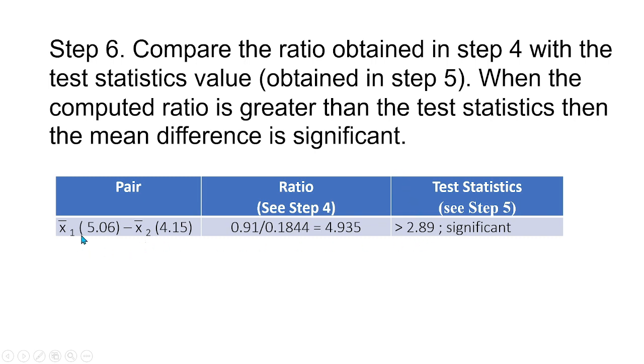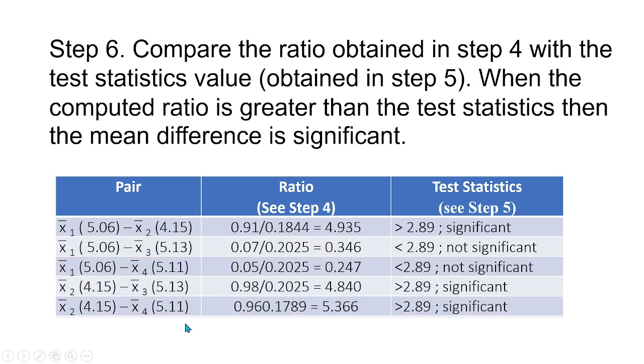So for example, for the first pair, our ratio was 4.935, and this is greater than the test statistics, which is 2.89. So that means the test is significant. We can say that 5.06 is not equal to 4.15. Or we can say that there is a significant difference between 5.06 and 4.15. For our next pair, 0.346 is lesser than 2.89. So this test is not significant. And therefore, we can say that 5.06 is equal to 5.13. So these are our decision for the rest of the pairs.